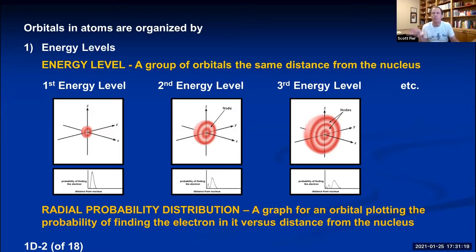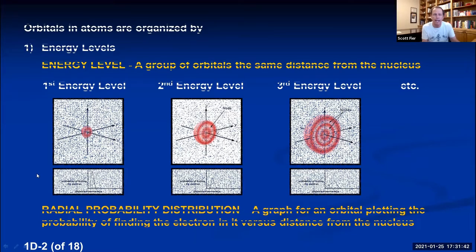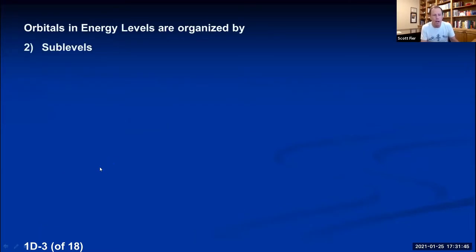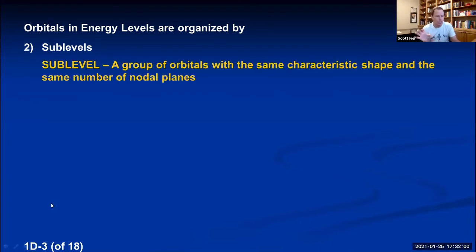The first way to organize orbitals is by energy level. Within a given energy level, orbitals can be broken down further by sublevels. A sublevel is a group of orbitals in an energy level that have a characteristic shape and, as we'll see, a characteristic number of nodal planes. Most importantly, a sublevel is a group of orbitals with the same characteristic shape in a given energy level.